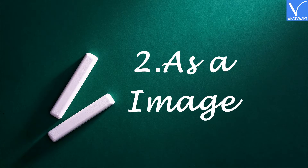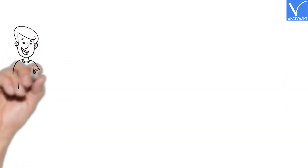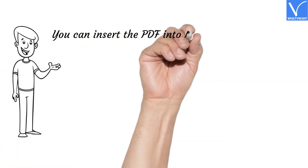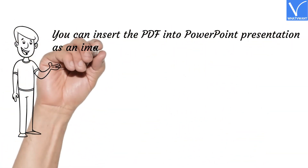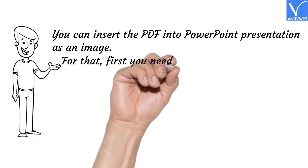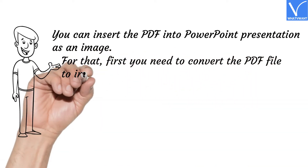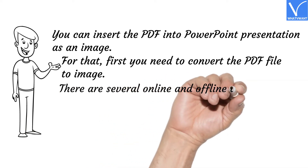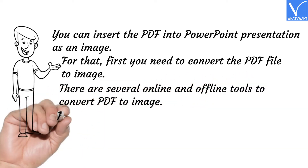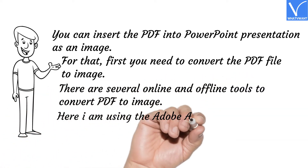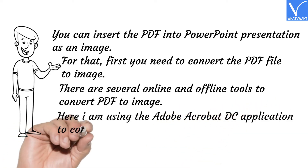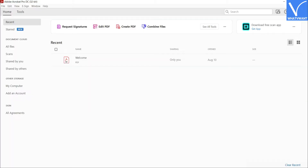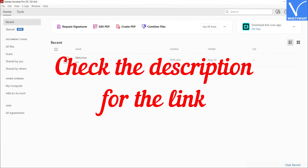Number 2: As an Image. You can insert the PDF into a PowerPoint presentation as an image. For that, first you need to convert the PDF file to an image. There are several online and offline tools to convert PDF to image. Here I am using the Adobe Acrobat DC application. Download and install Adobe Acrobat DC from its official site — check the description for the link.